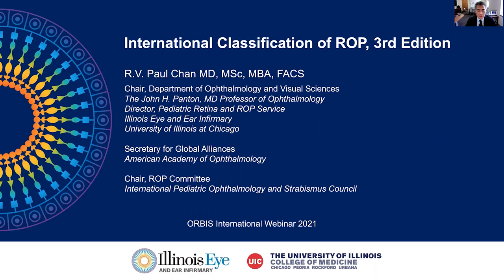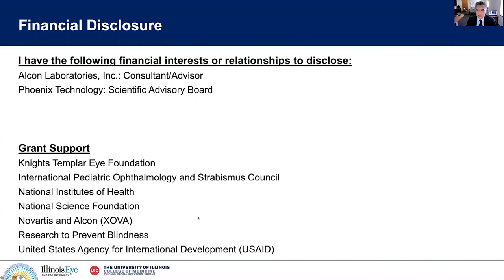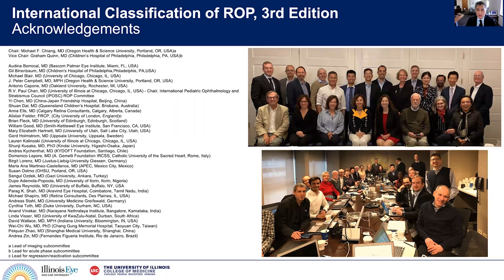I'd like to thank Orbis International for giving me the opportunity to present the International Classification of ROP, 3rd Edition. I'm Paul Chan, chair of the Department of Ophthalmology and Visual Sciences at the Illinois Eye and Ear Infirmary, University of Illinois at Chicago. I also serve as chair for the ROP Committee for IPOS, the International Pediatric Ophthalmology and Strabismus Council. I want to thank the Knights Templar Eye Foundation and IPOS for their generous support, and the incredible group of people who came together from around the world to bring us this iCROP 3rd Edition.